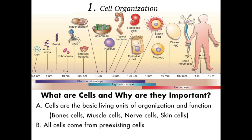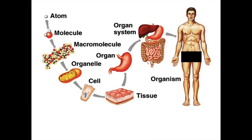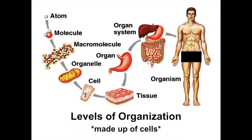With cell organization, you have the cell theory. There were two men, Schleiden and Schwann, who came up with ideas about cells. Cells come from pre-existing cells — a cell can't spontaneously come about from nothing. One cell may divide into two cells, but those two cells came from an original cell. Cells consist of atoms and molecules.